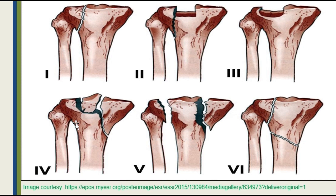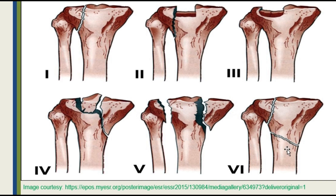In Type 4, there is a medial plateau fracture. Type 5 is a bicondylar fracture where both the lateral and medial plateaus are involved. In Type 6, there is a lateral plateau fracture along with metaphysis and diaphysis dissociation — a transverse fracture separates the metaphysis and diaphysis.